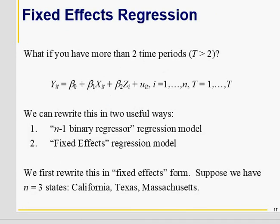The Fixed Effect Model basically means that we have some variables which vary across states, but they are unobserved — like culture, like driving culture, like eating culture. You cannot measure them, but those variables otherwise affect your response variable. So how do we take care of such an issue?